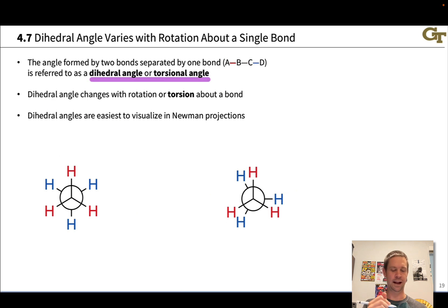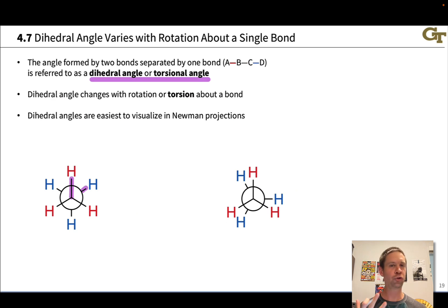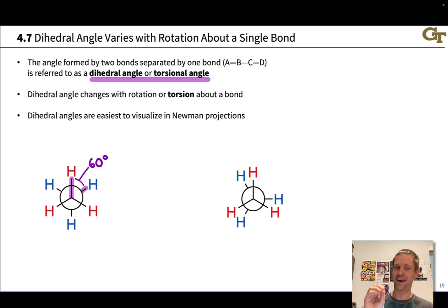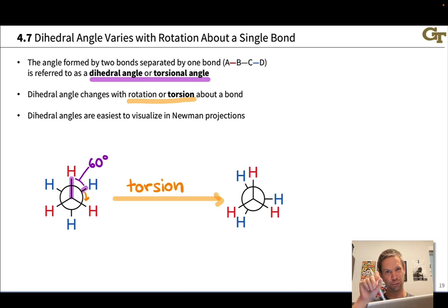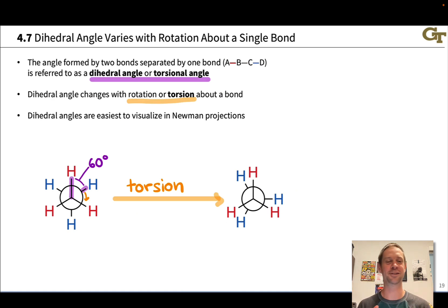Newman projections make torsional angles extremely easy to see — this is the beauty of Newman projections and why we use them when we think about conformation. Taking the staggered conformation of ethane, the torsional angle associated with two particular bonds is the angle between the highlighted bonds, which turns out to be 60 degrees. But if I rotate the back carbon and engage it in torsion, rotating those back CH bonds, the dihedral angle changes. This changing of the dihedral angle is what we call torsion — like wringing out a towel, you're changing the dihedral angle of one side relative to the other.